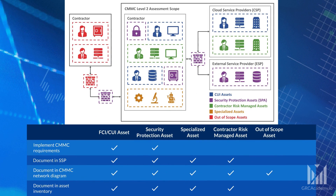Here is a scope diagram with a table showing what needs to be done for each asset category. For CUI and security protection assets, we must implement the CMMC requirements and document them in the SSP, network diagram, and asset inventory. For specialized and contractor risk-managed assets, we must document them in the SSP, boundary diagram, and asset inventory. Contractor risk-managed assets should be documented showing that policies, procedures, or technical measures are in place to prevent CUI from reaching these assets. Out-of-scope assets should only be shown on the network diagram, demonstrating that they are physically or logically separated from the CUI assets.